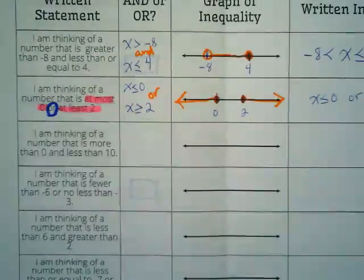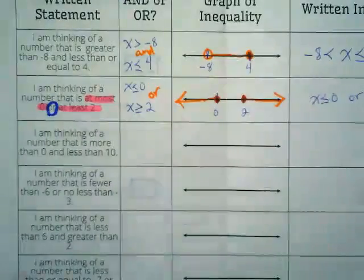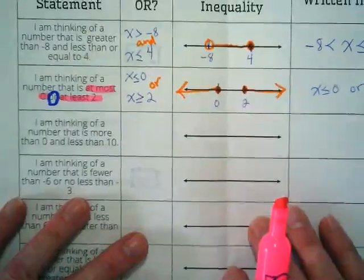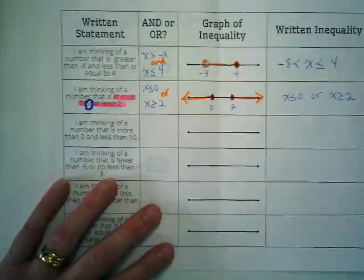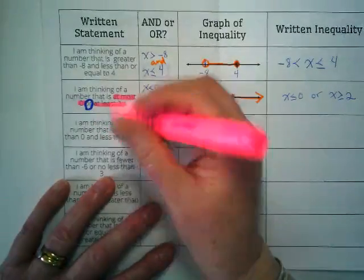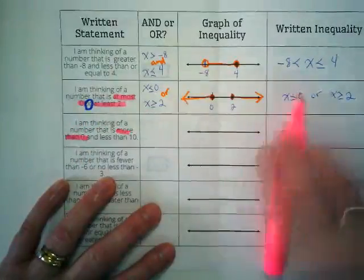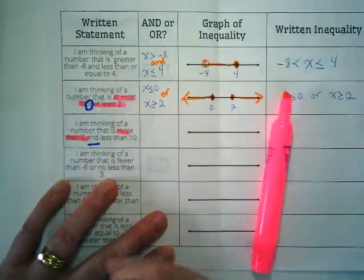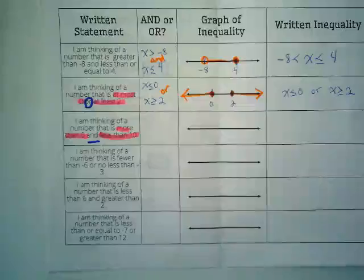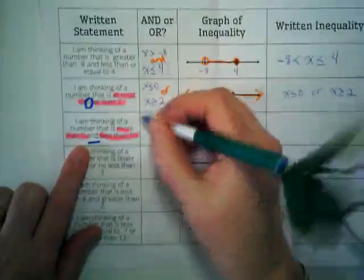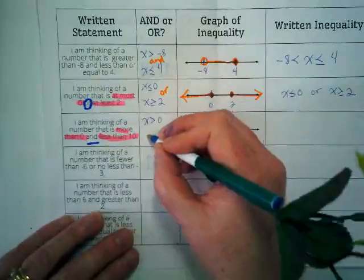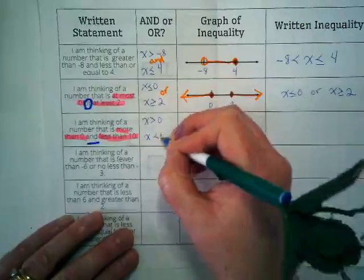What did you guys think of the next one? When I look at this, I'm looking at highlighting the critical words. When I look at the next statement, it says, I'm thinking of a number that is more than 0, and it's less than 10. I find these easiest to write if I just write the two statements, and then I put them together with the and or the or. So, X is more than 0. X is less than 10. That's true.